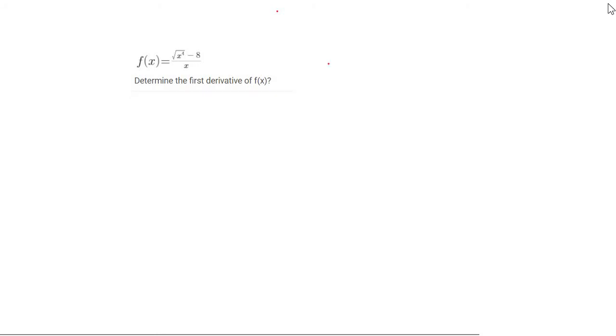In this question we have to find the first derivative. What we first need to do is just neaten up a little bit. We know that the square root of x⁴ is just going to be x². We have x² minus 8 over x.